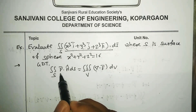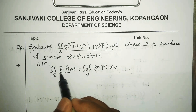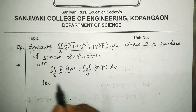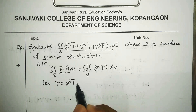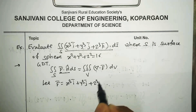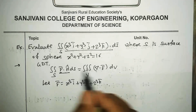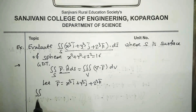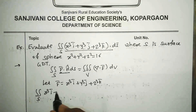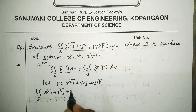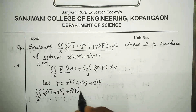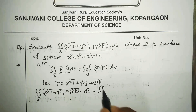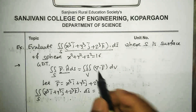Now compare the LHS of the problem statement with the LHS of the Gauss Divergence Theorem. We put F-bar = x³ i-bar + y³ j-bar + z³ k-bar. Substituting on both sides, the double integral over S of (x³ i-bar + y³ j-bar + z³ k-bar)·n-cap ds equals the triple integral over volume V of del·F-bar dV.